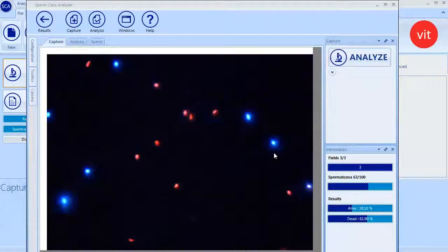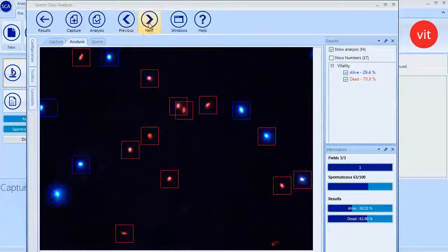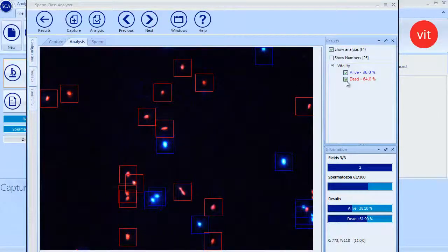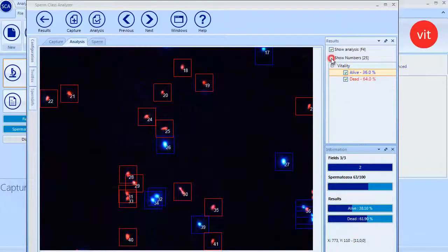All captured images are displayed in the analysis tab. Marking or unmarking results checkboxes, we can display or hide the spermatozoa of the vitality analysis. Main analysis information is always present on this side.